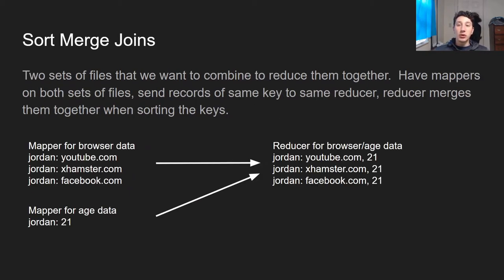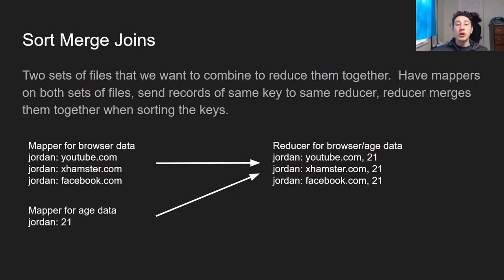The first join type is sort merge joins, also known as a reduce-side join because the reducer does the logic. Imagine two sets of files you want to merge where the key is the same. Mappers on both sets of files use a hash function to send records with the same key to the same reducer, and the reducer merges them. For example, you might have browser data and age data — through the partitioning and hash function they get sent to the same reducer, which attaches the age data to every piece of browser data.